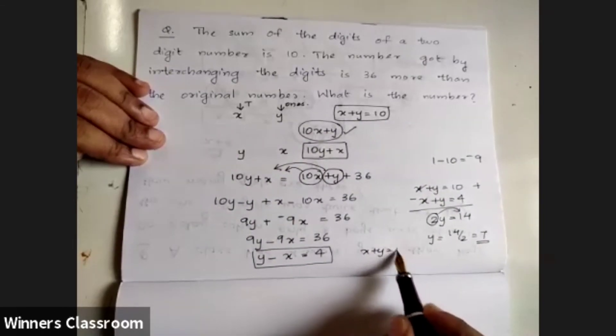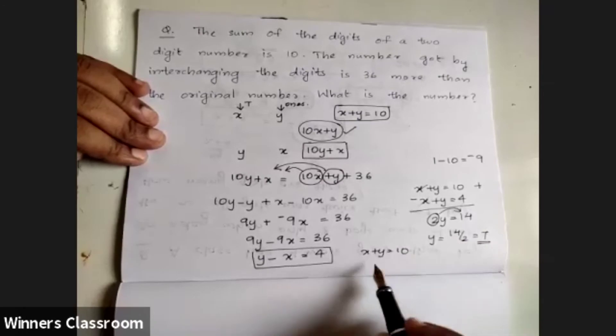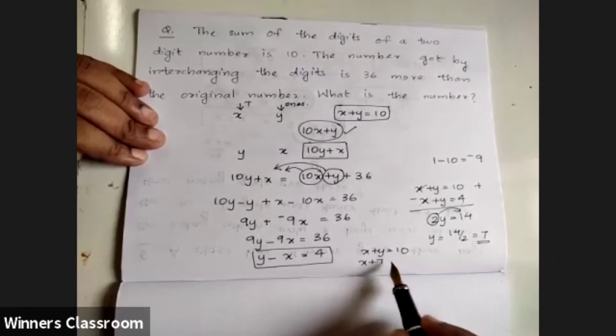From x plus y equals 10, with y equals 7, we get x plus 7 equals 10, so x equals 3.